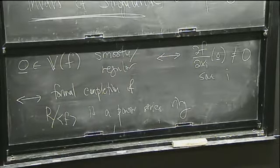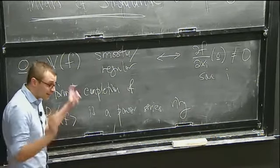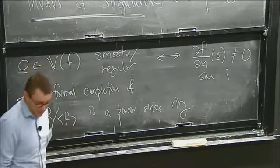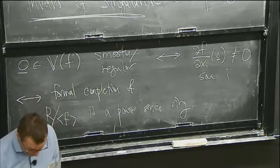I can't say that this means f locally looks like a complex manifold, but I can say that the formal completion is a power series ring. So still, in some sense, if you look locally analytically, it looks like something related to power series.